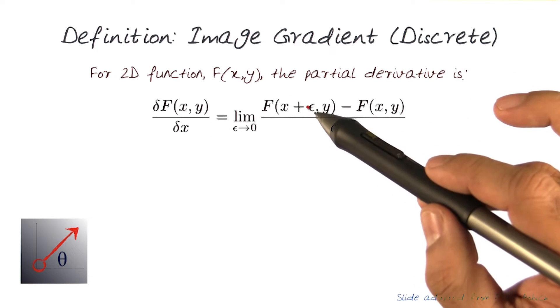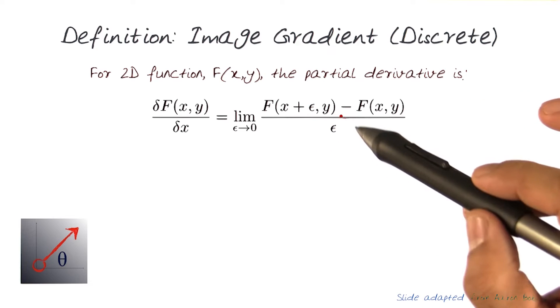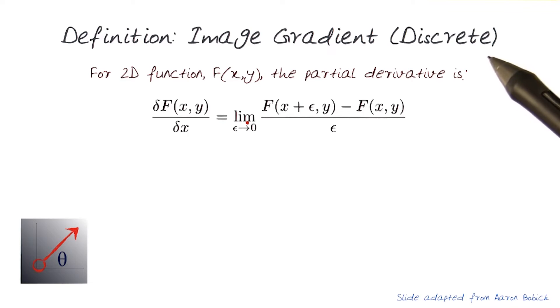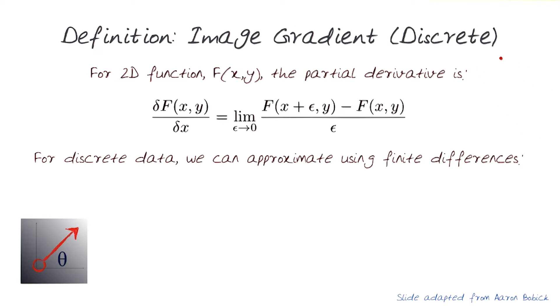What we would be looking for is a small epsilon change over x between the two different values with epsilon going to infinity. For the discrete data, we can approximate this using finite differences,